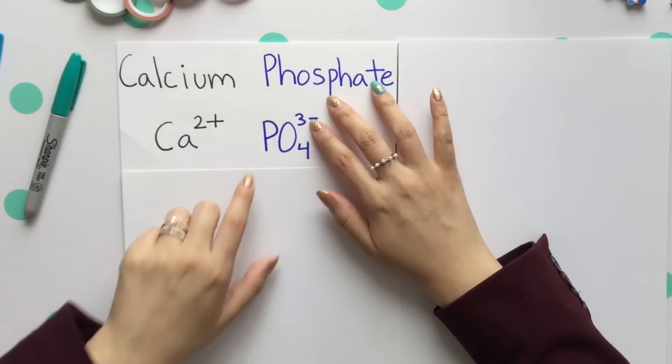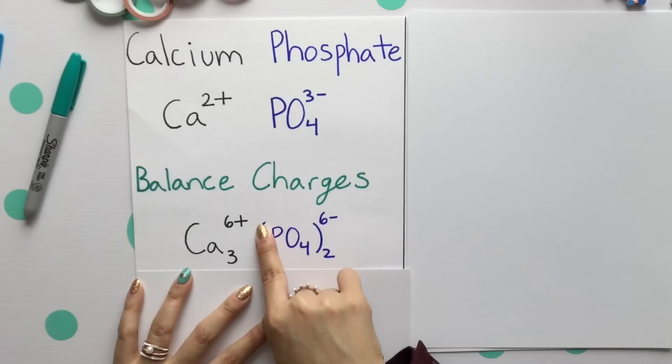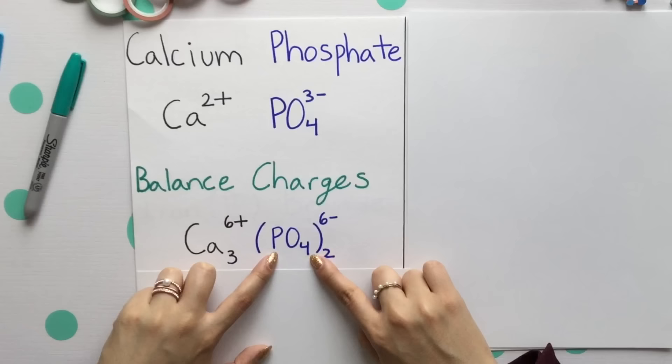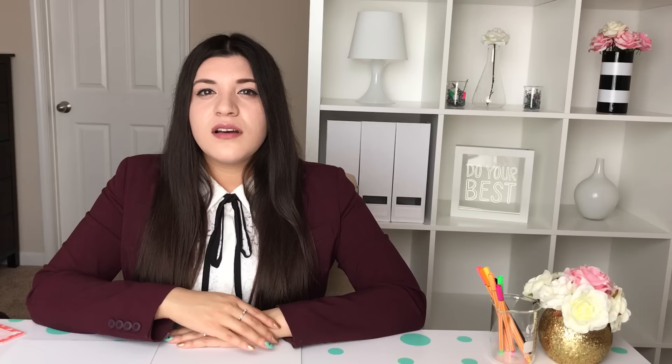Phosphate started off with 4 oxygen. To balance our charges, we need to place this in parentheses to isolate that phosphate group. We'll place our 3 with calcium, giving us a 6+ charge. We'll place our 2 on the outside of parentheses. These are now balanced. Your final compound is calcium phosphate.